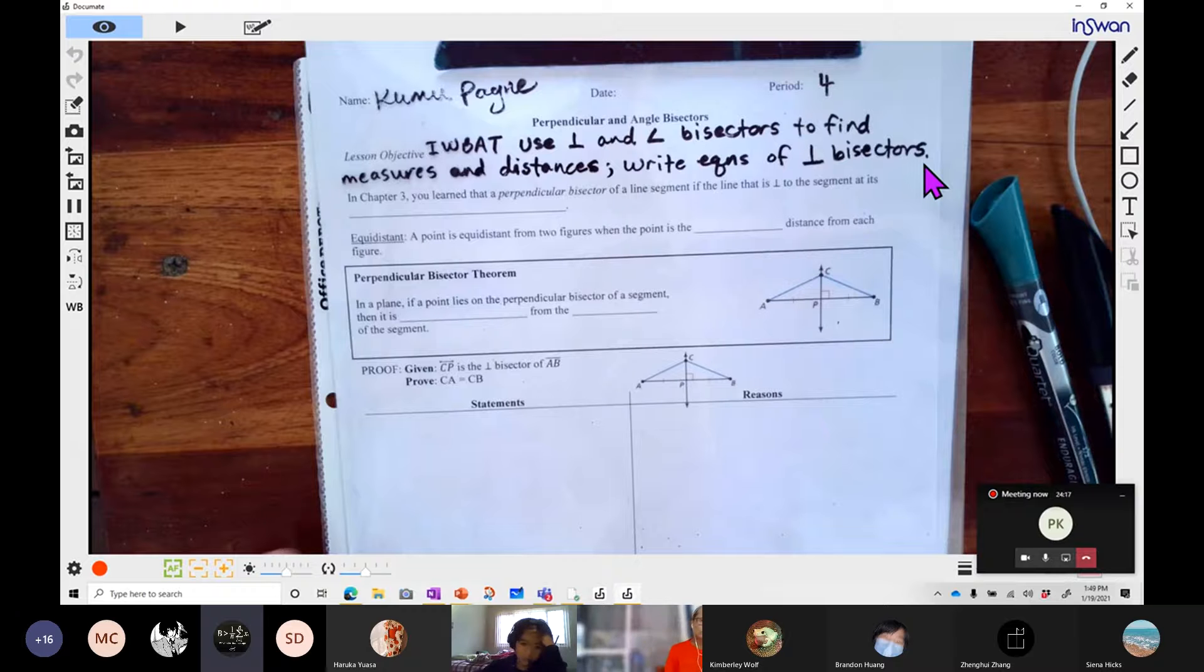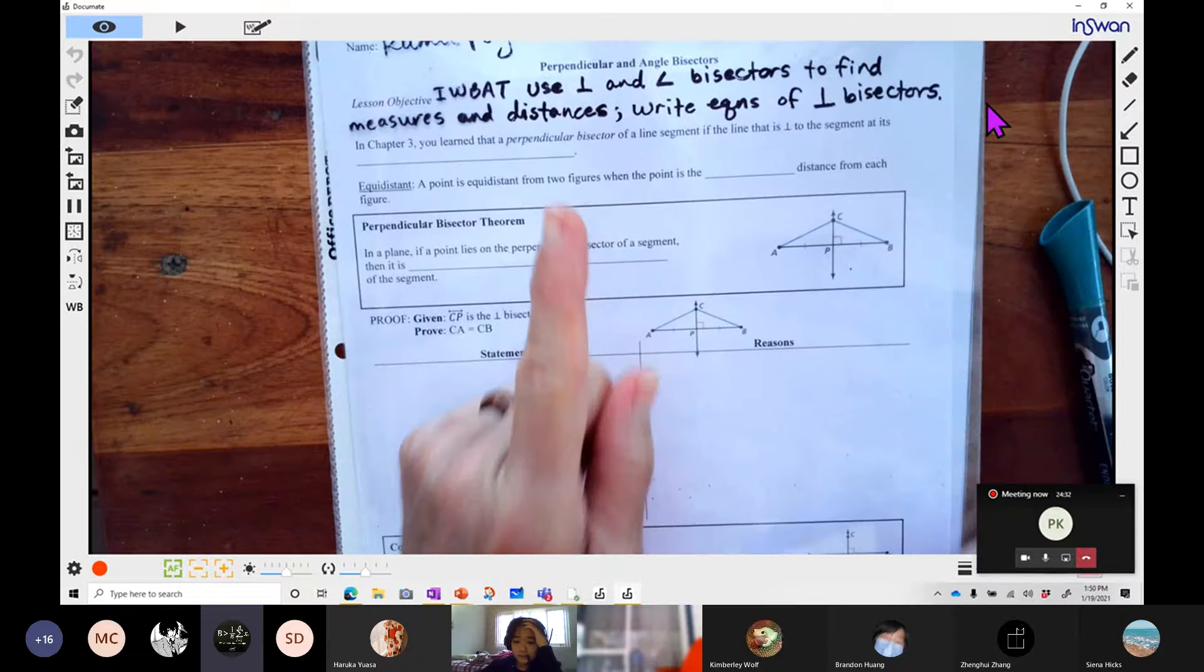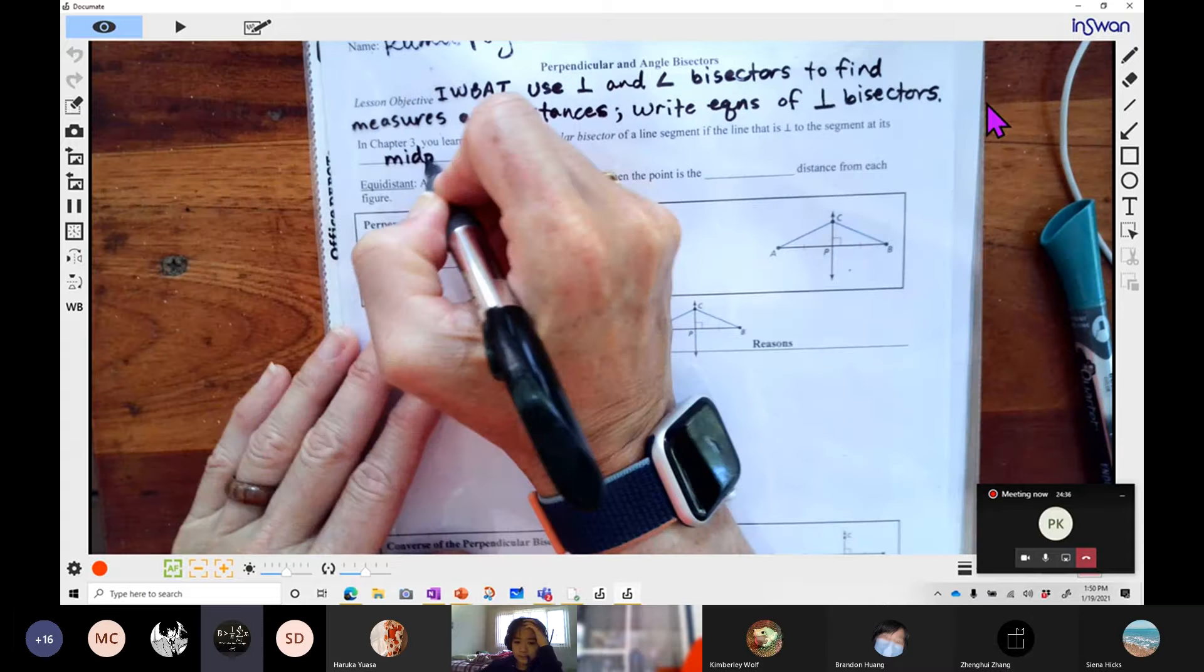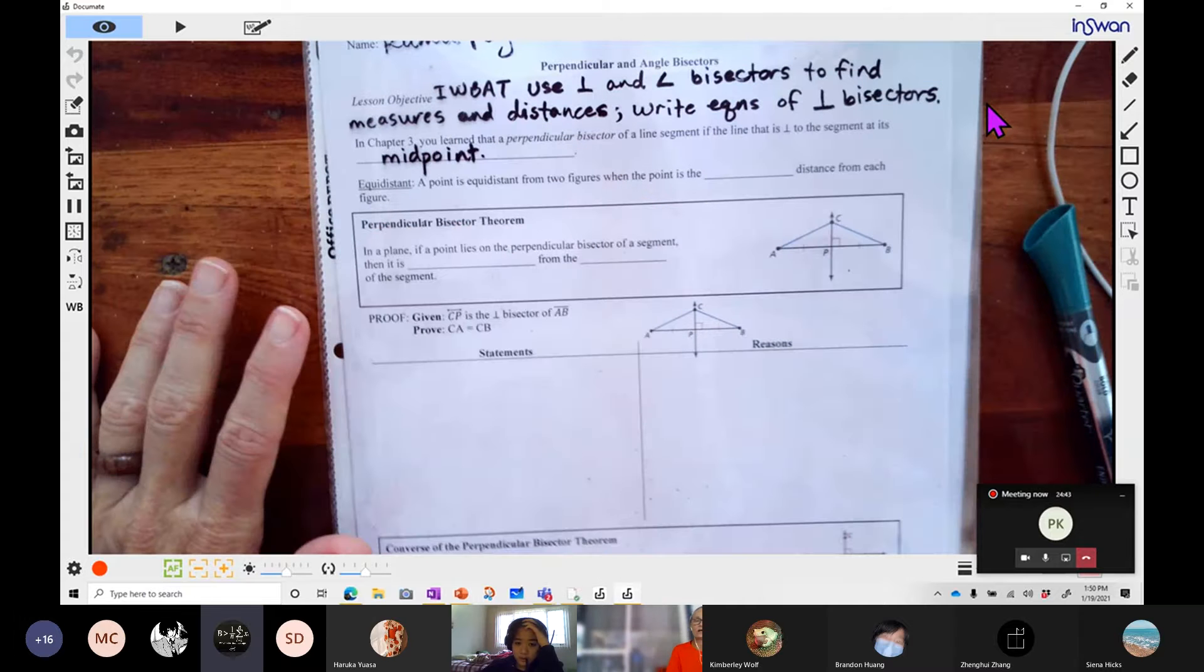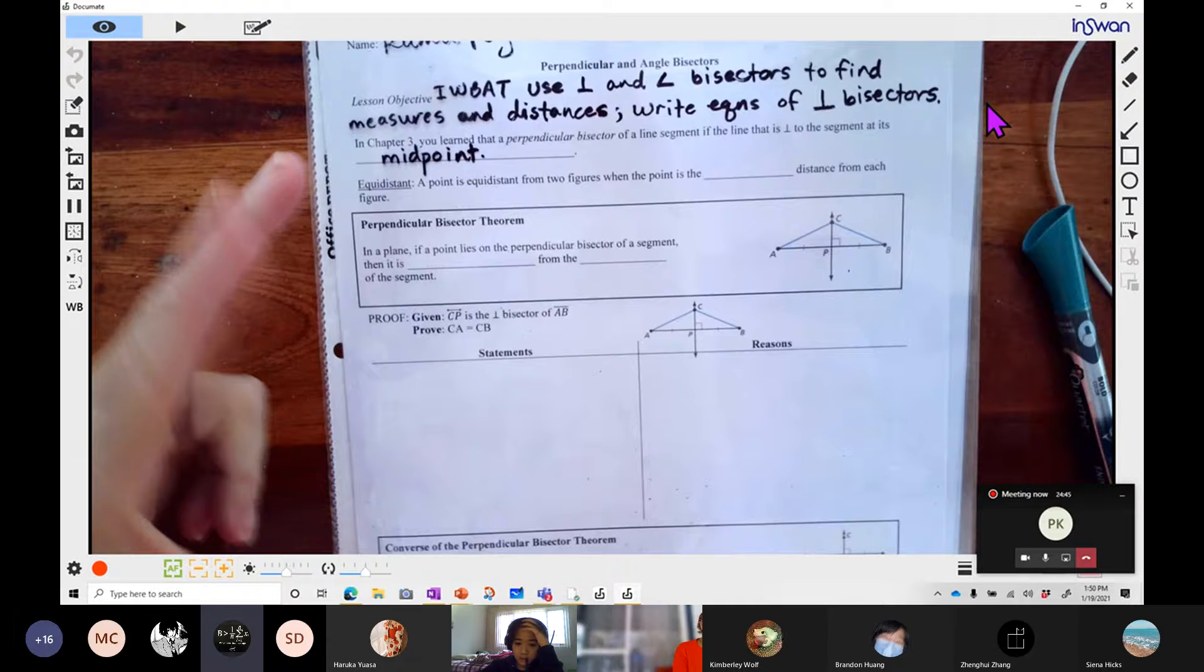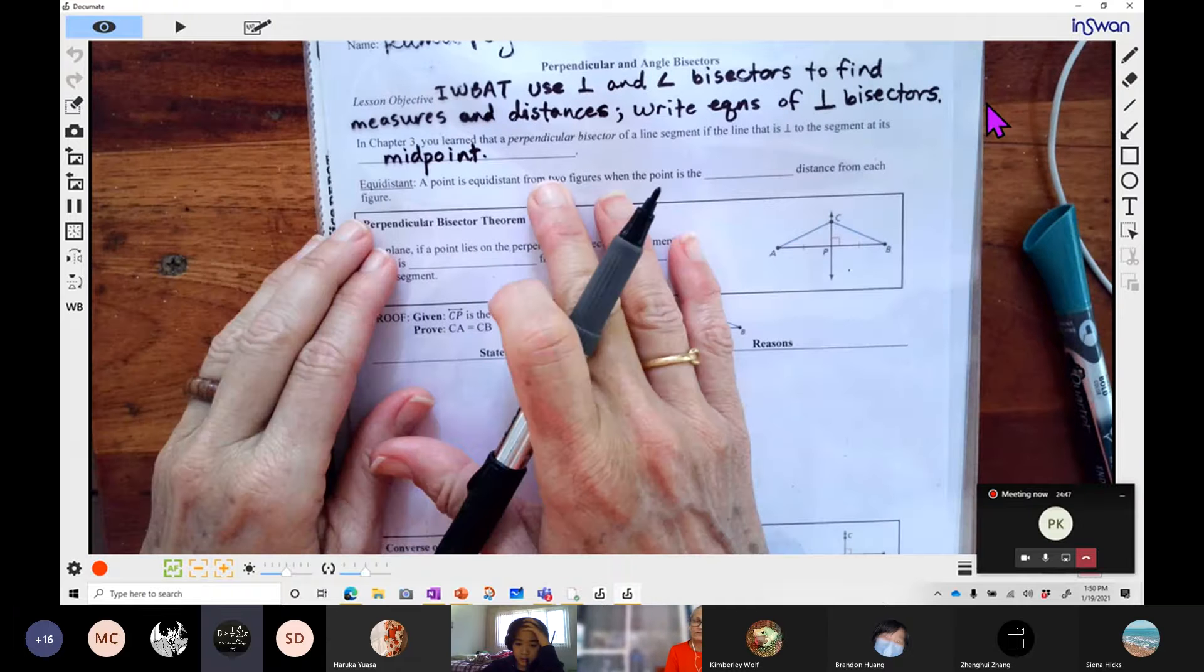So our topic is perpendicular and angle bisectors and our objective is that I will be able to use perpendicular and angle bisectors to find measures and distances. In chapter three you learned that a perpendicular bisector of a line segment is the line that is perpendicular to the segment at its midpoint. The new vocabulary is equidistant. A point is equidistant from two figures when the point is the same distance from each figure.